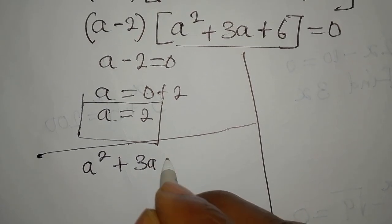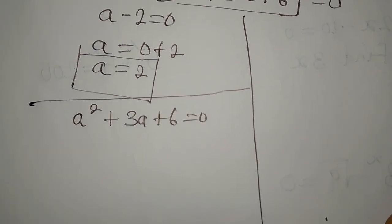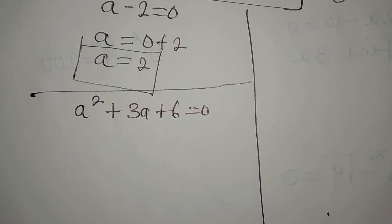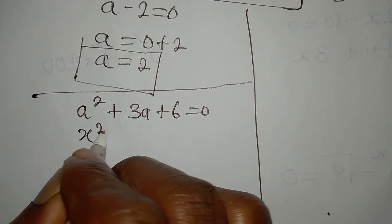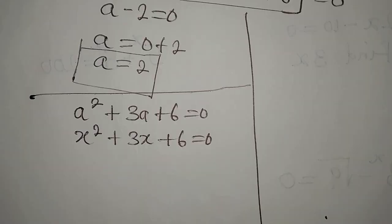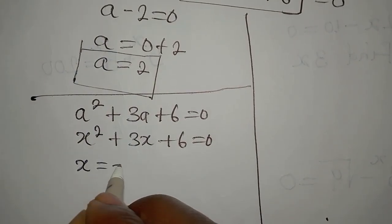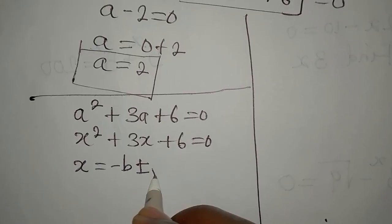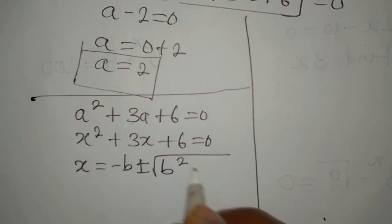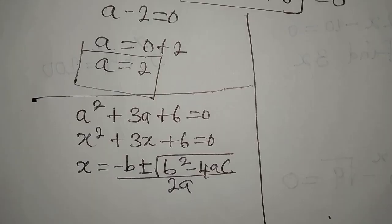This is a quadratic equation and we'll solve it using the general quadratic formula. Let's rename the variable to x to avoid confusion: x² + 3x + 6 = 0, where x represents our a. The formula is x = (−b ± √(b² − 4ac)) / 2a.